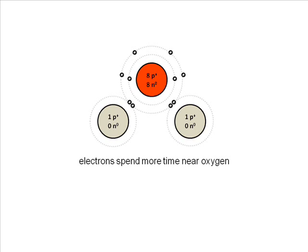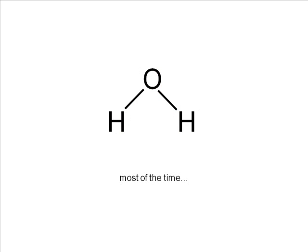The result is that most of the time the oxygen atom, with eight protons in its nucleus, is surrounded by ten electrons. The hydrogen atoms each have one proton and are surrounded by essentially no electrons most of the time. There are still ten electrons and ten protons in this molecule, so it's electrically neutral as a whole — but the oxygen side is slightly negative and the hydrogen side is slightly positive.